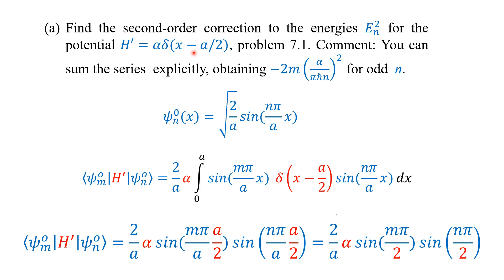That is, we are disturbing the system at the middle of the square well potential, that is at a/2, where a is the width of the potential well. It is asked to comment that you can sum the series explicitly, obtaining −2Mα² divided by (nπℏ)² for odd n. For even n, it is going to be 0, as we will see now.